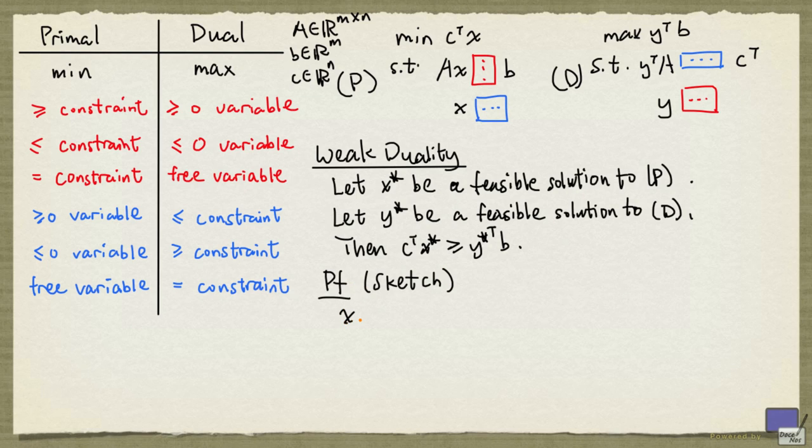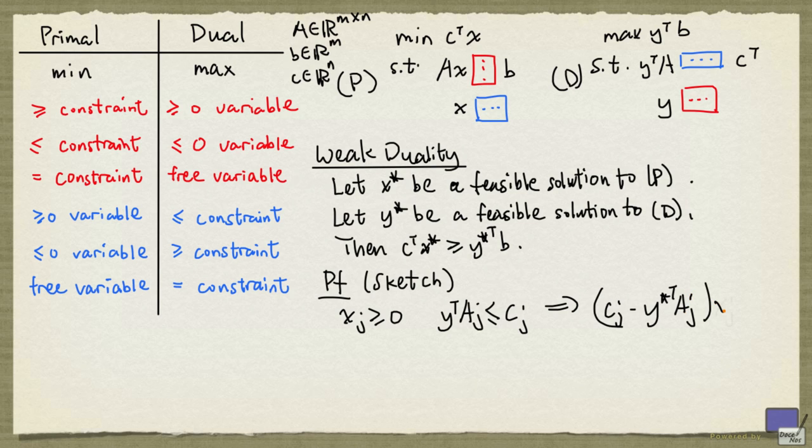So if you look at a primal variable that is constrained to be non-negative, then the corresponding dual constraint is a less than or equal to inequality. So here a subscript j denotes the jth column of a. And so what this means is cj minus y star transpose aj times x star j is non-negative.